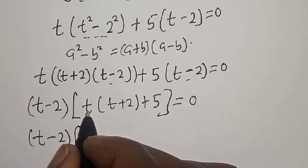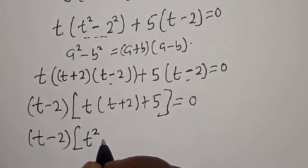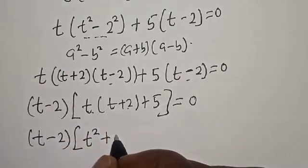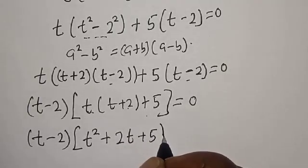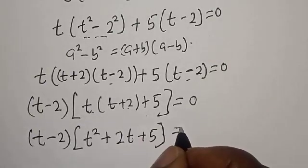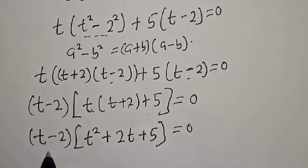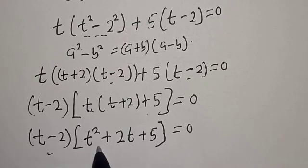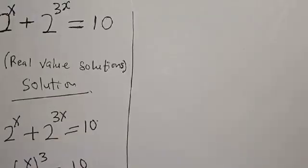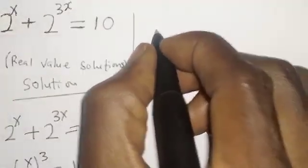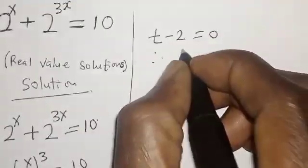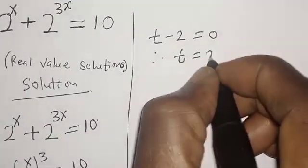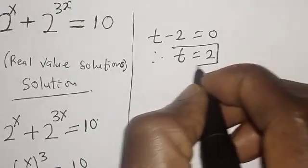Expanding: t minus 2 times t squared plus 2t plus 5 is equal to 0. There are two cases: t minus 2 equals 0, or t squared plus 2t plus 5 equals 0. From the first case, t minus 2 equals 0, therefore t equals 2.